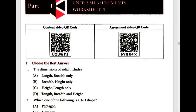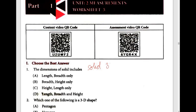Hello friends, welcome to TNPSC Stars channel. In this video, we will show you the 8th standard worksheet 5. First, the dimensions of a solid: a solid is a 3D shape. A 3D shape has length, breadth, and height — 3 parameters.